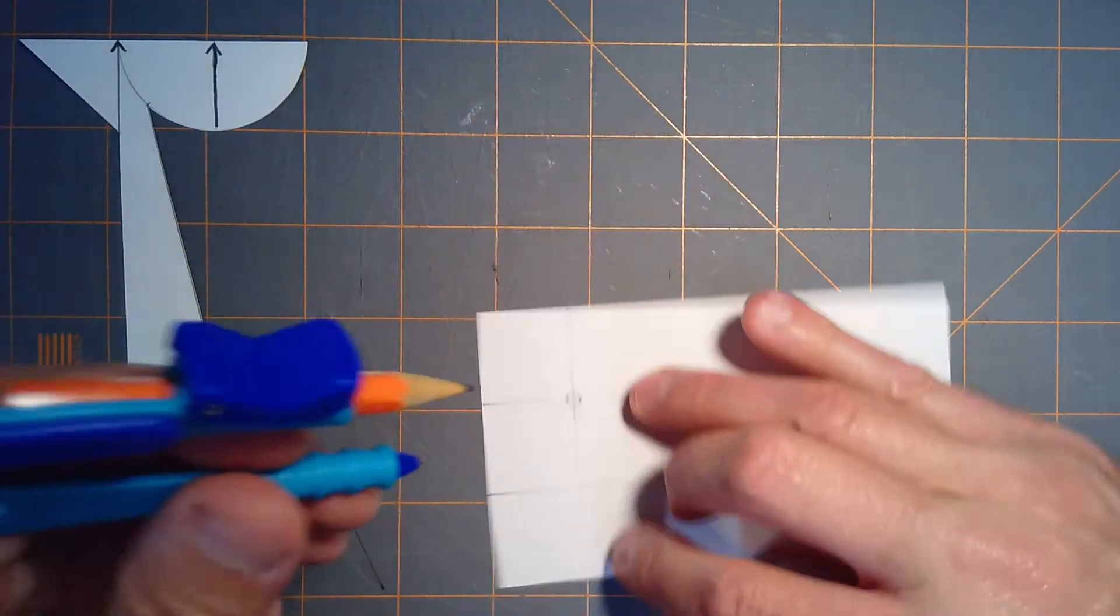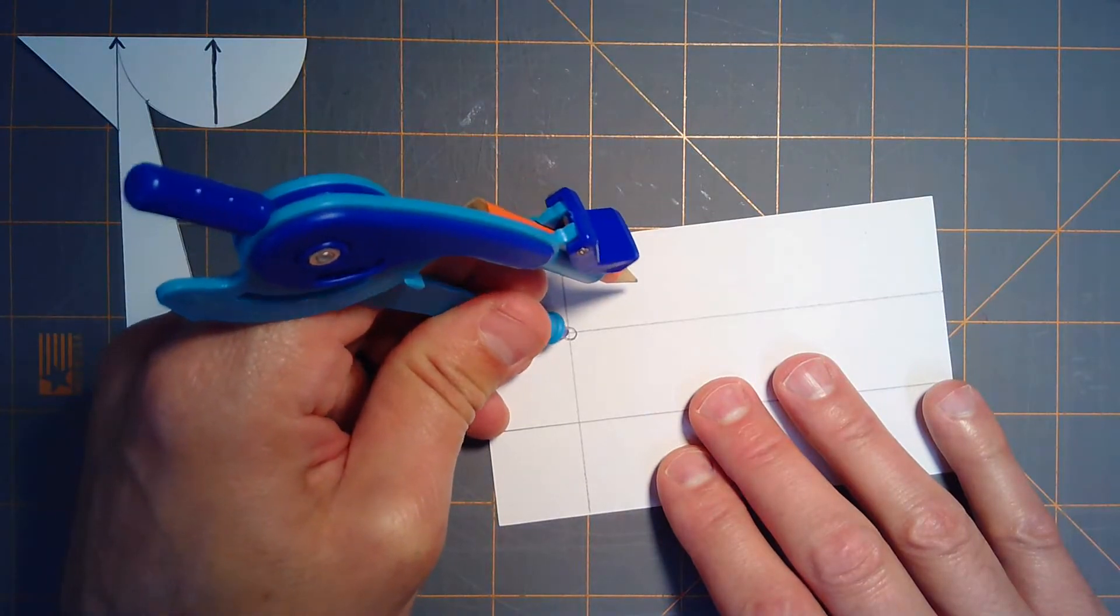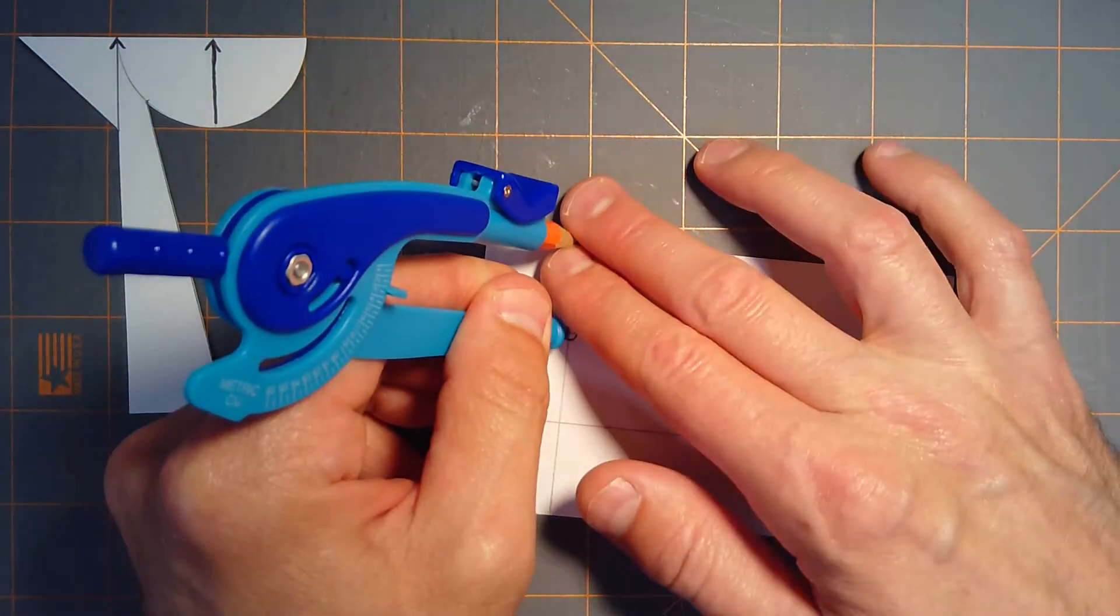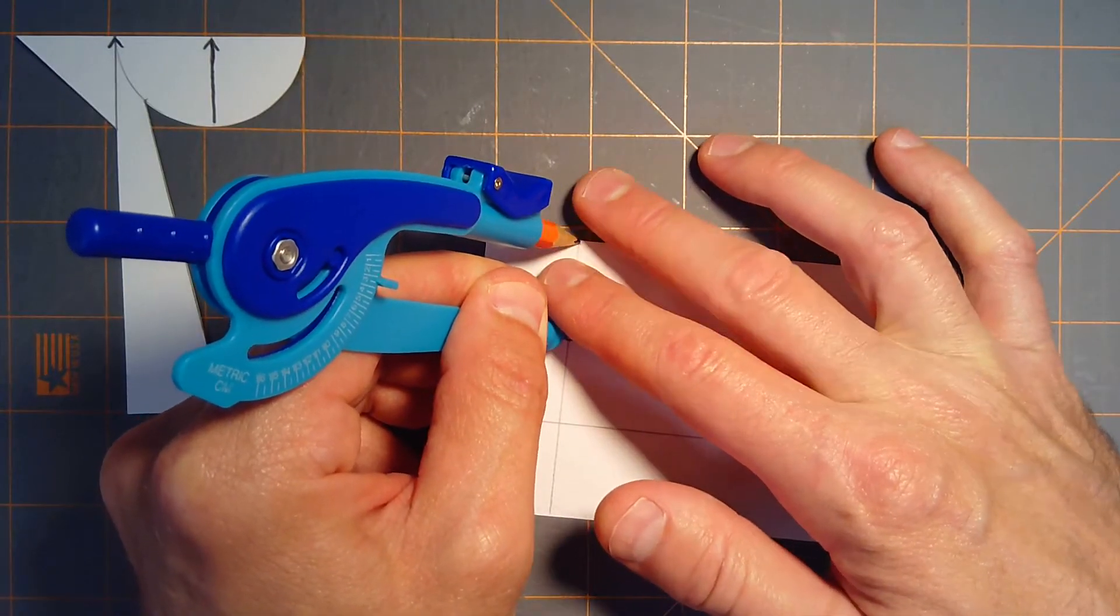All right, I'm just going to turn my card. I'm a lefty and this will make it easier for me to do that. Just make sure I've got one inch here on the radius.